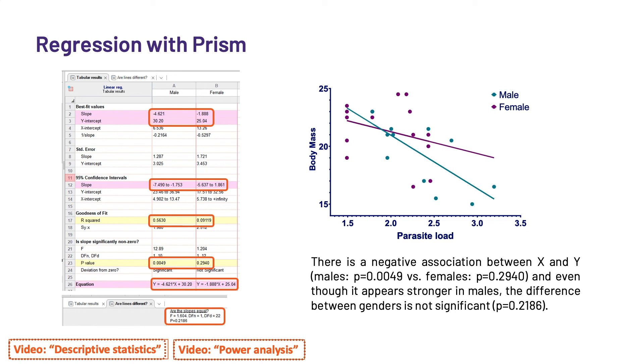Then we get the R-square. Totally cool. Here, we can see that 56% of the variability in body mass is explained by the parasite load in males versus only 9% in females. That is an important piece of information, as it suggests that there is a big difference between males and females. And finally, the two p-values, which we already guessed from the confidence intervals, significant for the males, but not for the females.